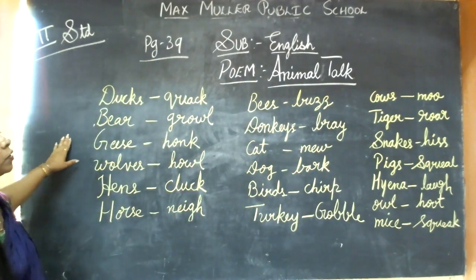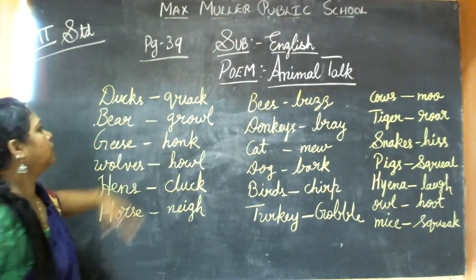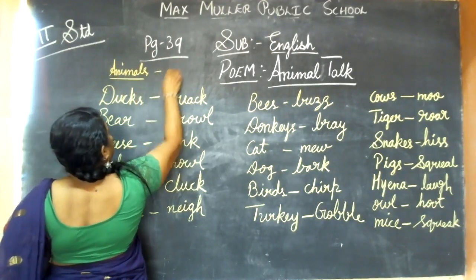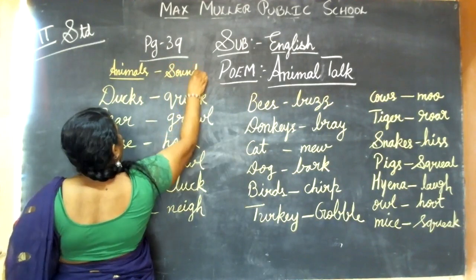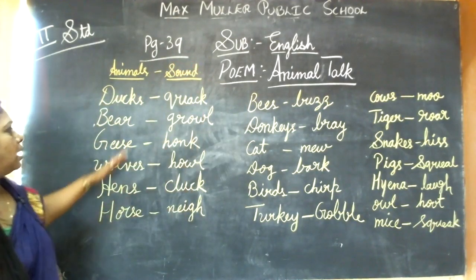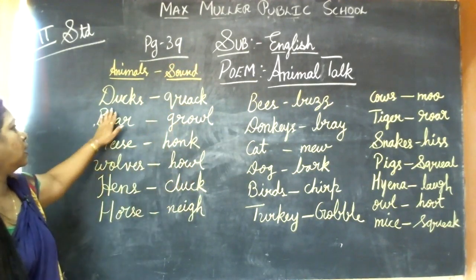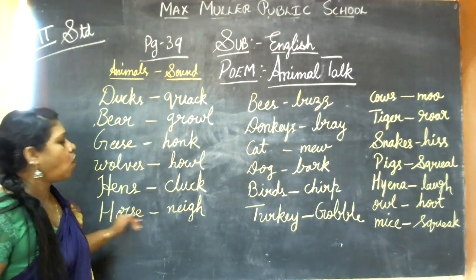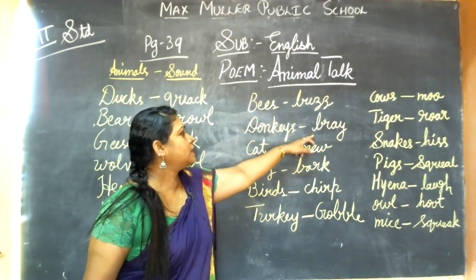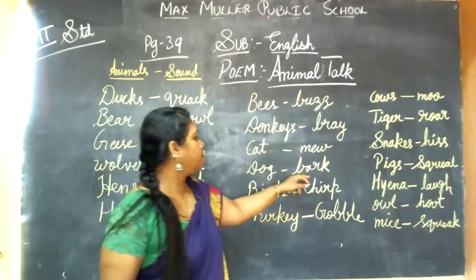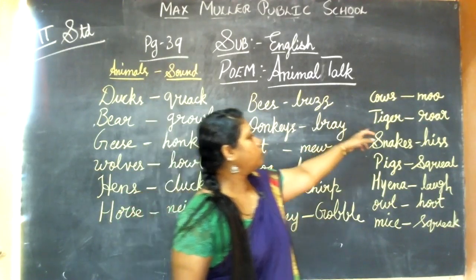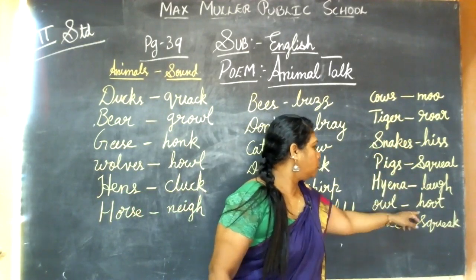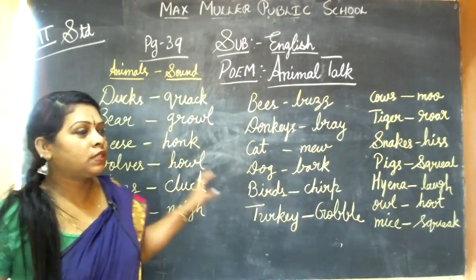These are the sounds produced by all these animals. This is the animal and the sound. Ducks quack, bears growl, geese honk, wolves howl, hens cluck, horses neigh, bees buzz, donkeys bray, cats meow, dogs bark, birds chirp, turkeys gobble, cows moo, tigers roar, snakes hiss, pigs squeal, hyenas laugh, owls hoot, mice squeak. Note down this and write it on quickly.